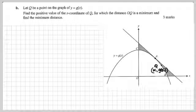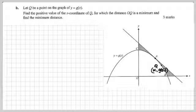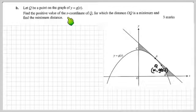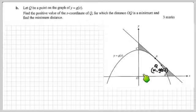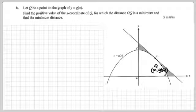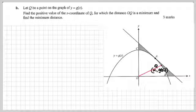Now part B: let Q be a point on the graph of y = g(x). Find the positive value of the x-coordinate of Q for which the distance O to Q is a minimum, and find this distance. We'll draw the line OQ and work out the distance between the two points by Pythagoras.